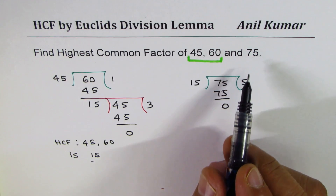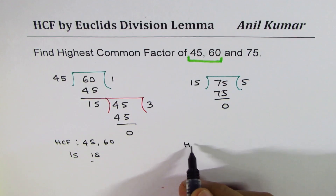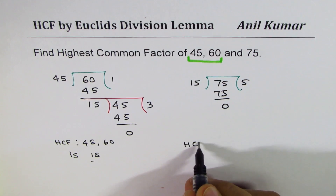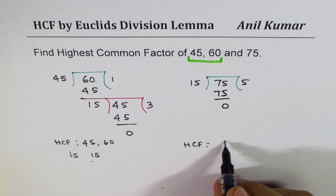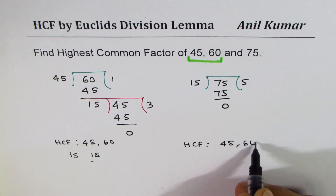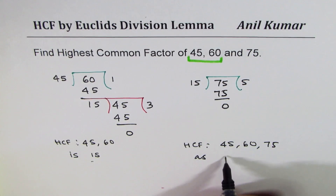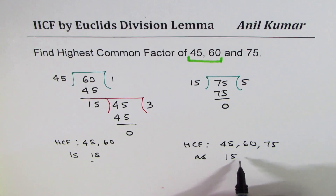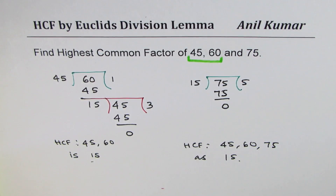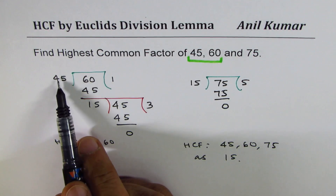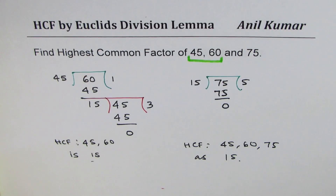Since the remainder is 0, 15 is the highest common factor with 75 also. So the highest common factor between 45, 60, and 75 is 15. That is how we do this repeated division: divide the previous divisor by the remainder, and continue until the remainder is 0.